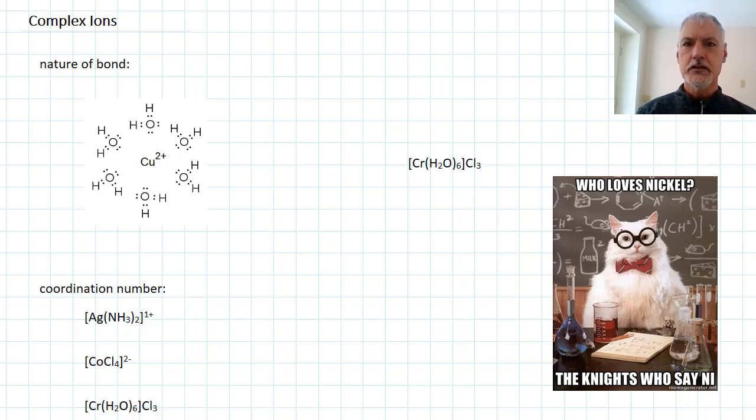In this program, I want to take a closer look at the nature of the complex ions that our transition metals form. In our last program, I introduced this complex ion, a copper ion in the center with water molecules surrounding. And you might recall that what creates the bond is the electrostatic attraction that our substances on the outside by donating pairs of electrons towards that central positively charged atom. And we called this the coordinate bond.